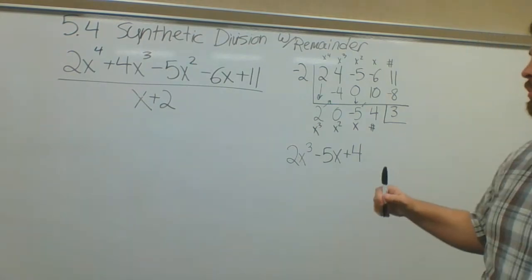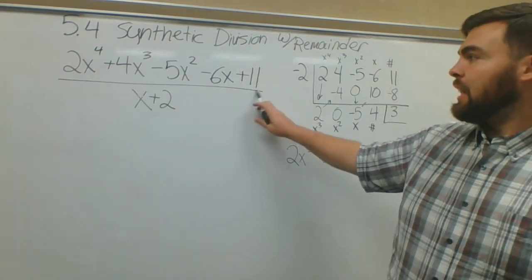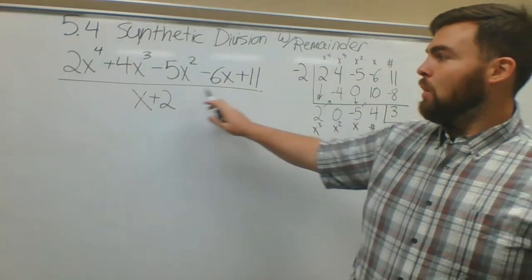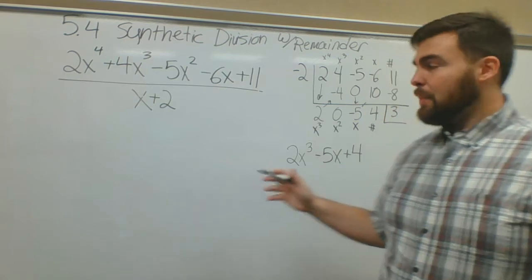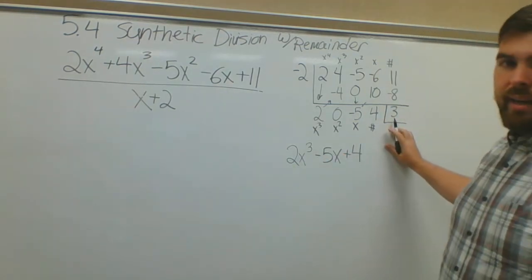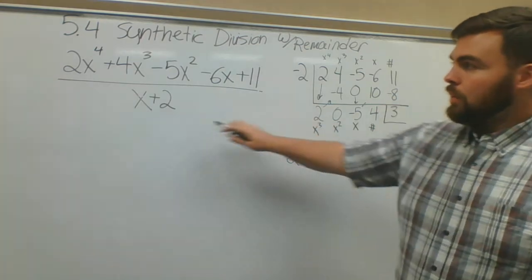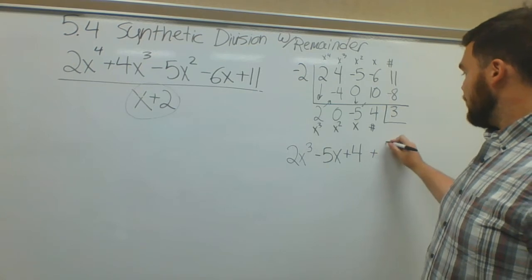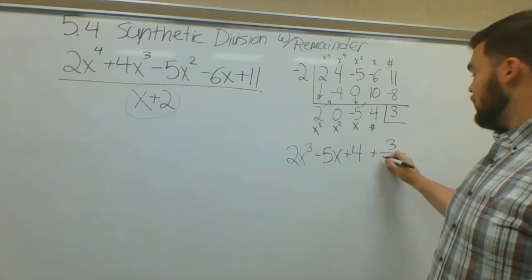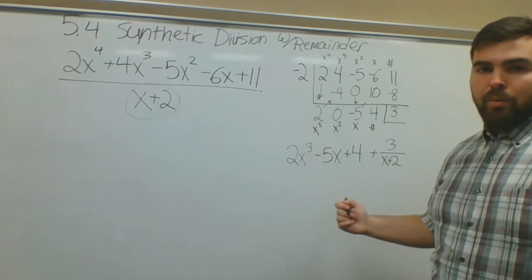This is how synthetic division works. Now let's talk about the remainder. In 5.2, when we talked about when we just had a constant at the end and we put it over the denominator, same idea here, except we'll use this instead. So this is what I'm putting over my original denominator.